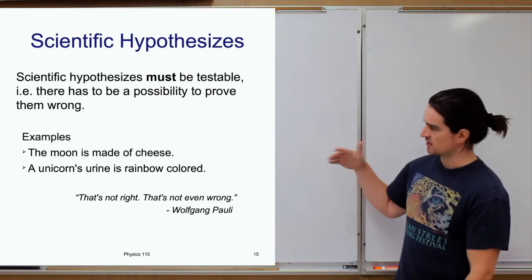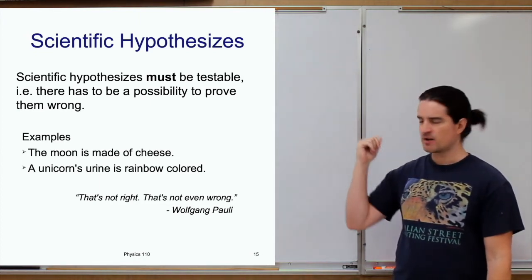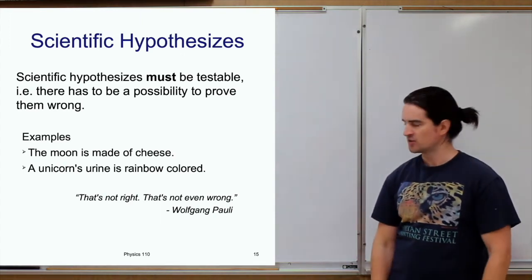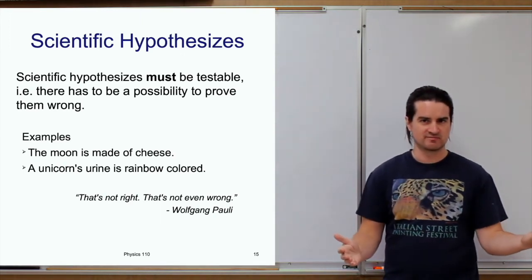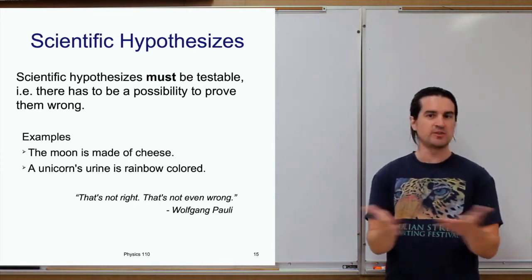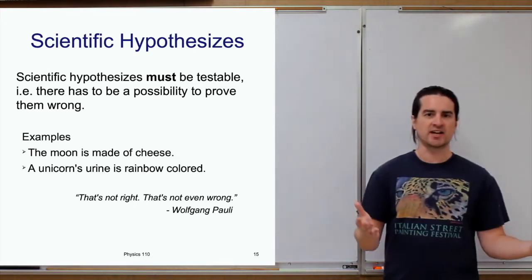The second example here, a unicorn's urine is rainbow-colored. It comes out like a rainbow. This is not a scientific hypothesis. Why? Because there is no way I can test it. If there were unicorns, then I could test that hypothesis, right?